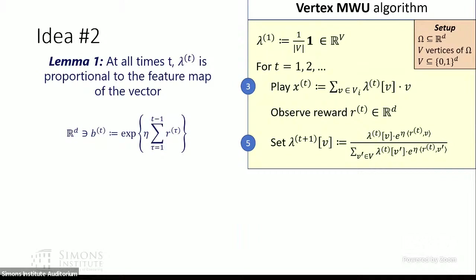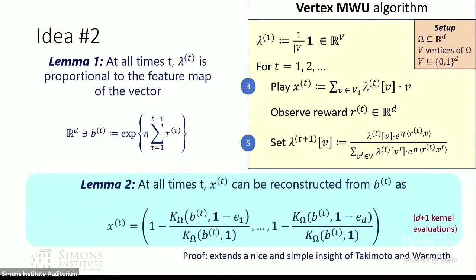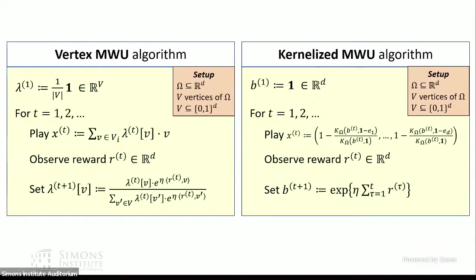The formula for x_T uses one kernel evaluation per numerator — one per dimension, plus one for the denominator K(B_T, 1). So we need only D+1 kernel evaluations total. The proof extends a beautiful insight of Takimoto and Warmuth. Combining these two pieces, we don't need to store lambda anymore — we just store B_T — and we have a closed formula for line three of vertex-MW that only depends on the kernel. This gives us kernel-MW, which exactly simulates vertex-MW.